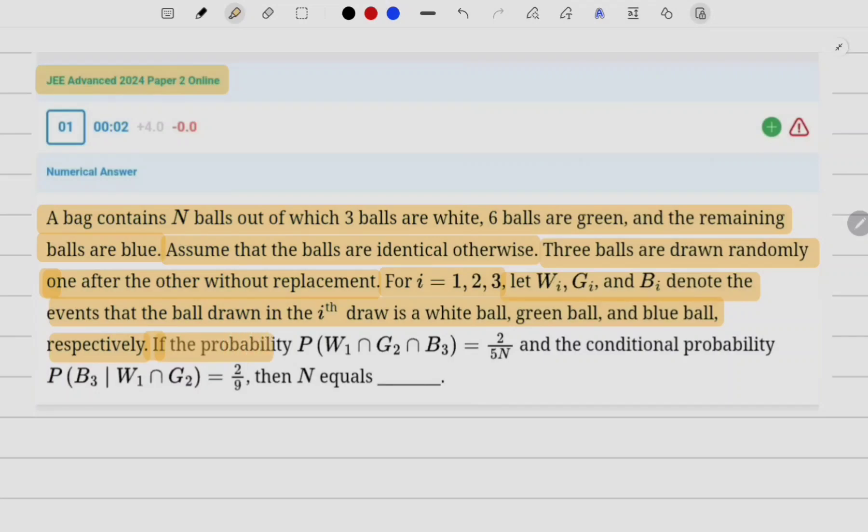If the probability P(W1 ∩ G2 ∩ B3) is 2/(5N) and the conditional probability P(B3 | W1 ∩ G2) is 2/9, then N equals?